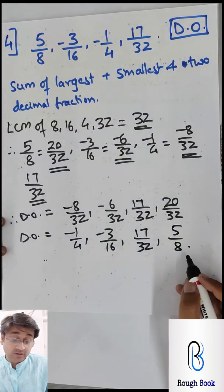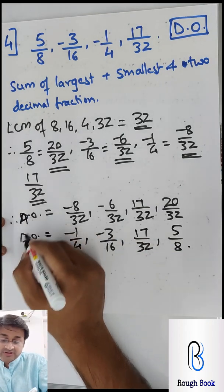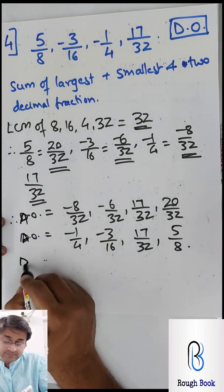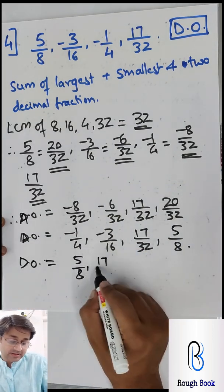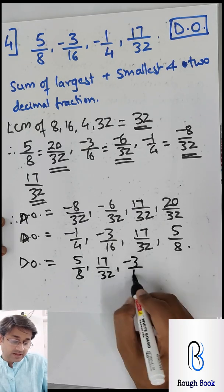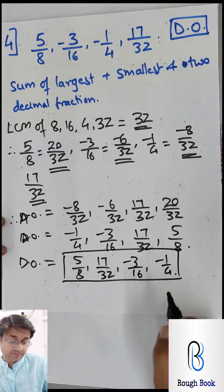Oh, this is ascending order, the other we wrote. We have to write it in descending order - means ulta. My bad. So this is ascending, you don't need this actually. So descending order, directly I am writing: 5 by 8, 17 by 32, negative 3 by 16, and negative 1 by 4. That's my final answer.